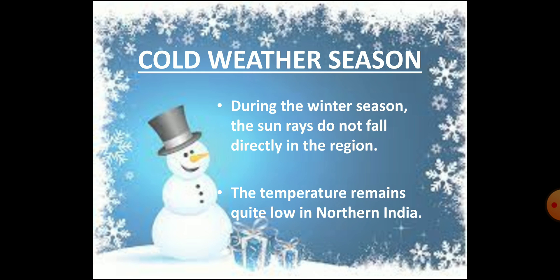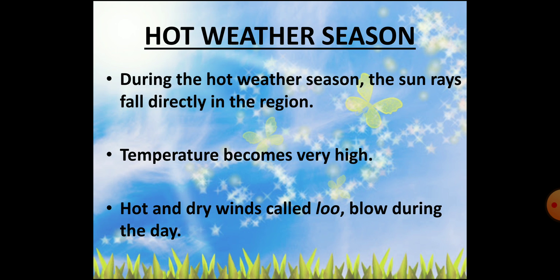The first season is the cold weather season or the winter season, falling between December and February. During the winter season, sun rays do not fall directly in the region. Winter is more severe in North India where the temperature drops very low. However, South India, especially the coastal areas, hardly experiences winter. After the winter season comes the summer season, which extends from March to May. In this season, the sun rays fall vertically in the region, causing a sharp increase in temperature. Strong hot and dry winds called loo blow during the day in the northern plains and northwestern parts of India.